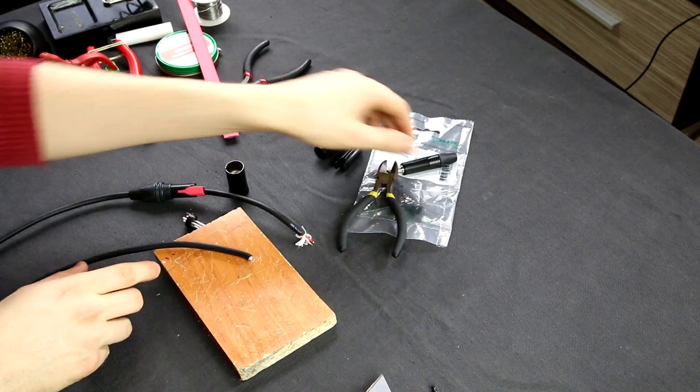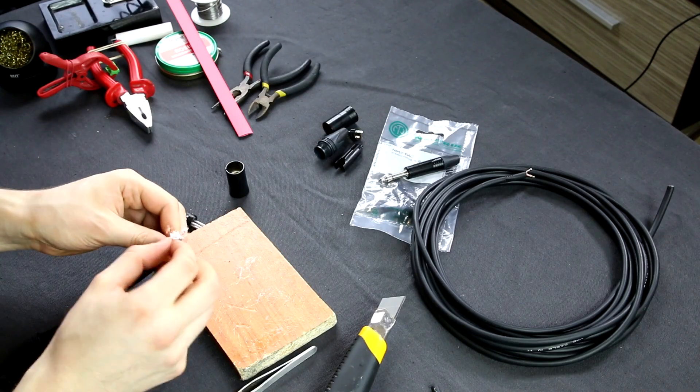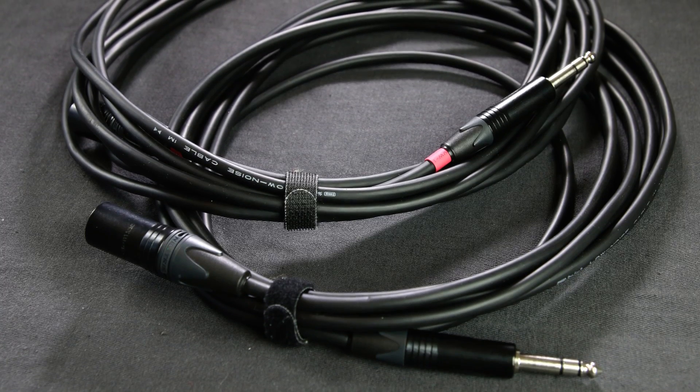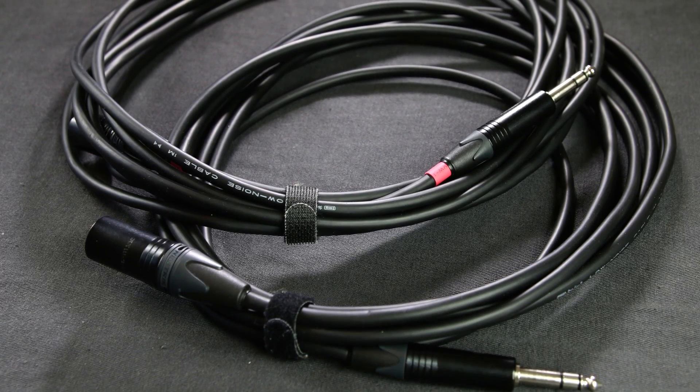Do the same for the other end, but here we are going to put the 6.35 millimeter plug, because the cable that we're making is balanced XLR to quarter inch.